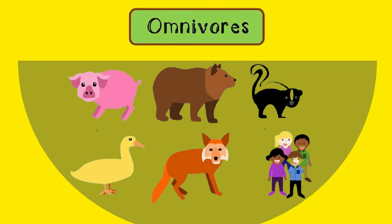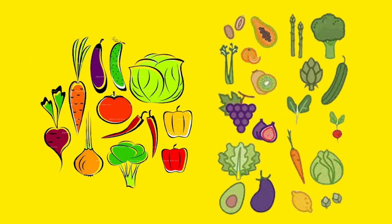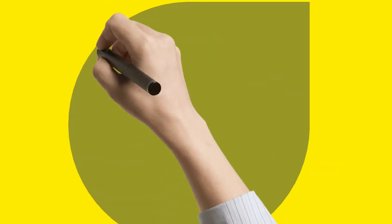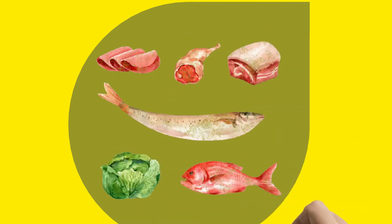Humans are also omnivores as their food is based on both plants and animals. We eat vegetables and fruits which come from plants, and we also eat meat which comes from chickens, cows, fish, etc.